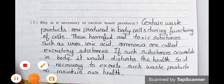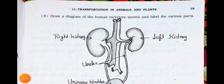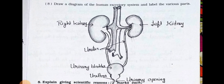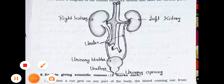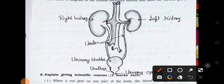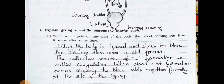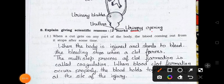We will see question number 8 on the next page. Question number 8: Draw a labelled diagram of the human excretory system and label the various parts. See the diagram. You have to draw the diagram and mention the two kidneys — the left kidney and the right kidney. The left kidney should be shown a little bit smaller compared to the right kidney. This one is the ureter, this one is the urinary bladder, this one is the urethra, and this one is the urinary opening.